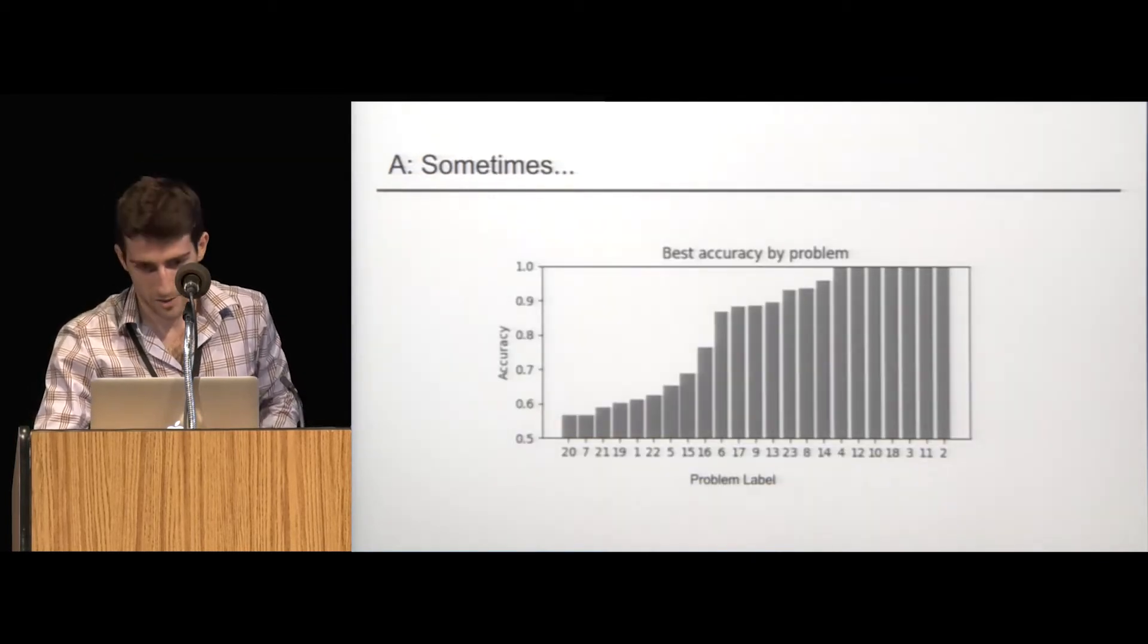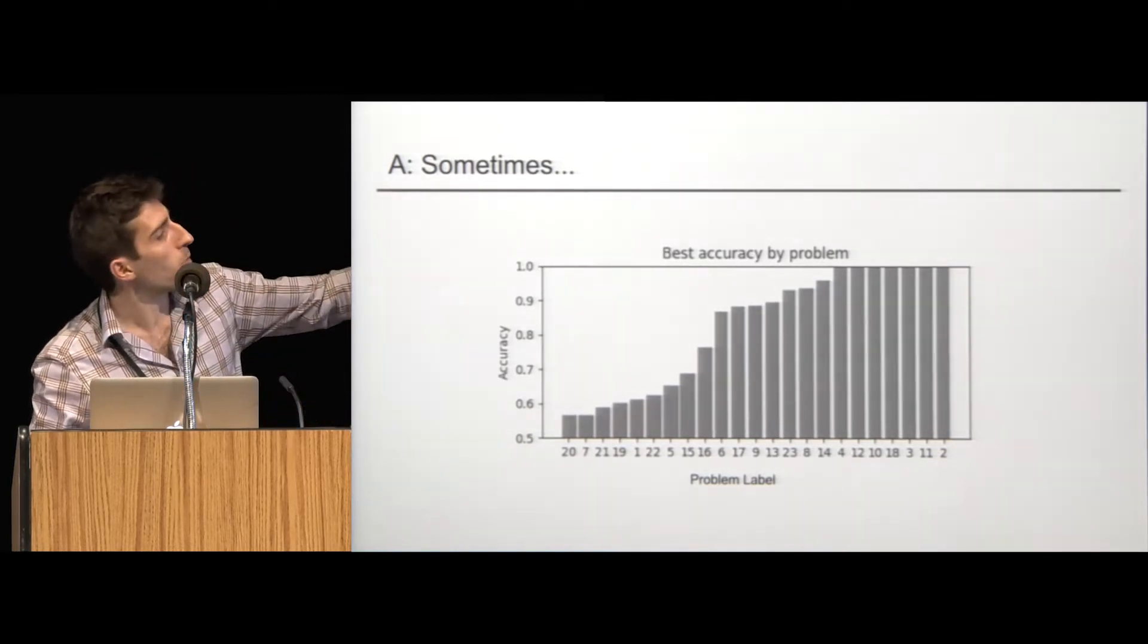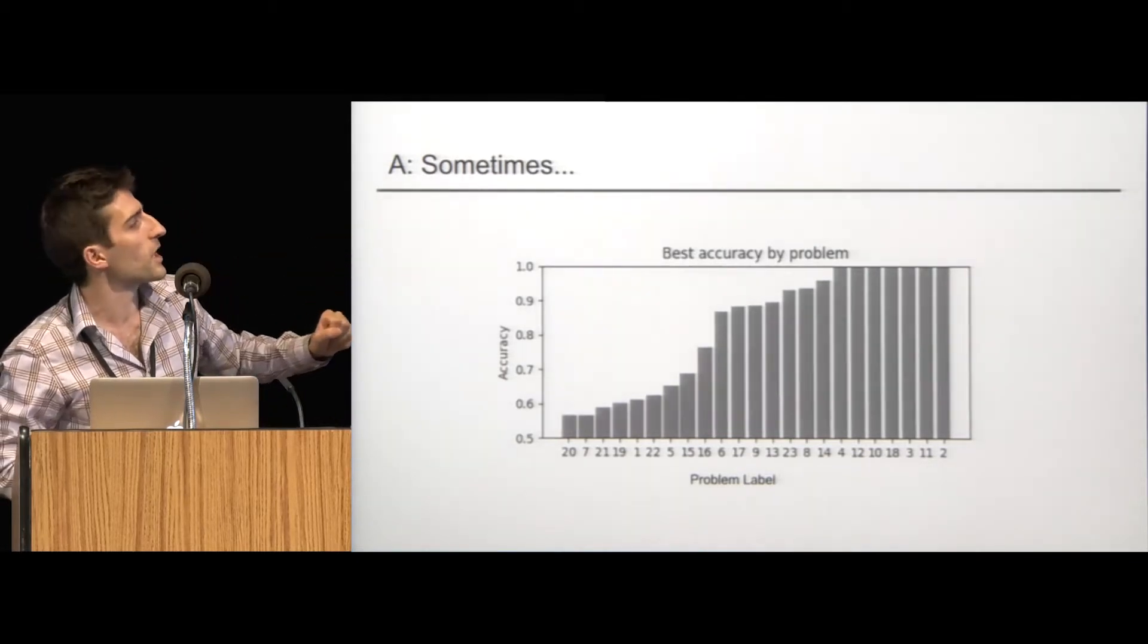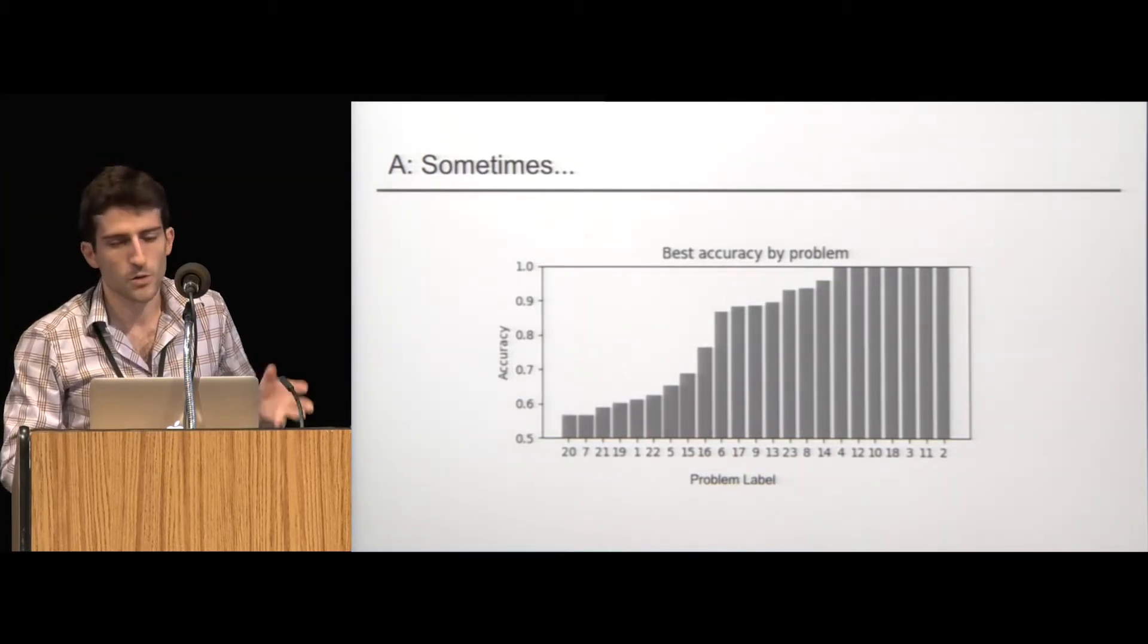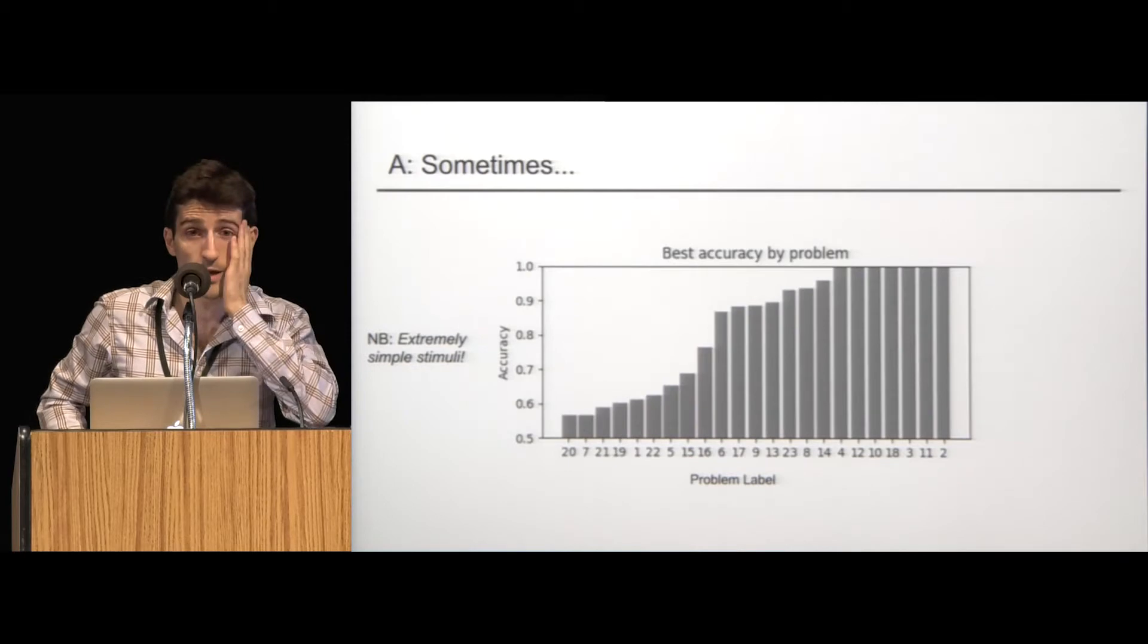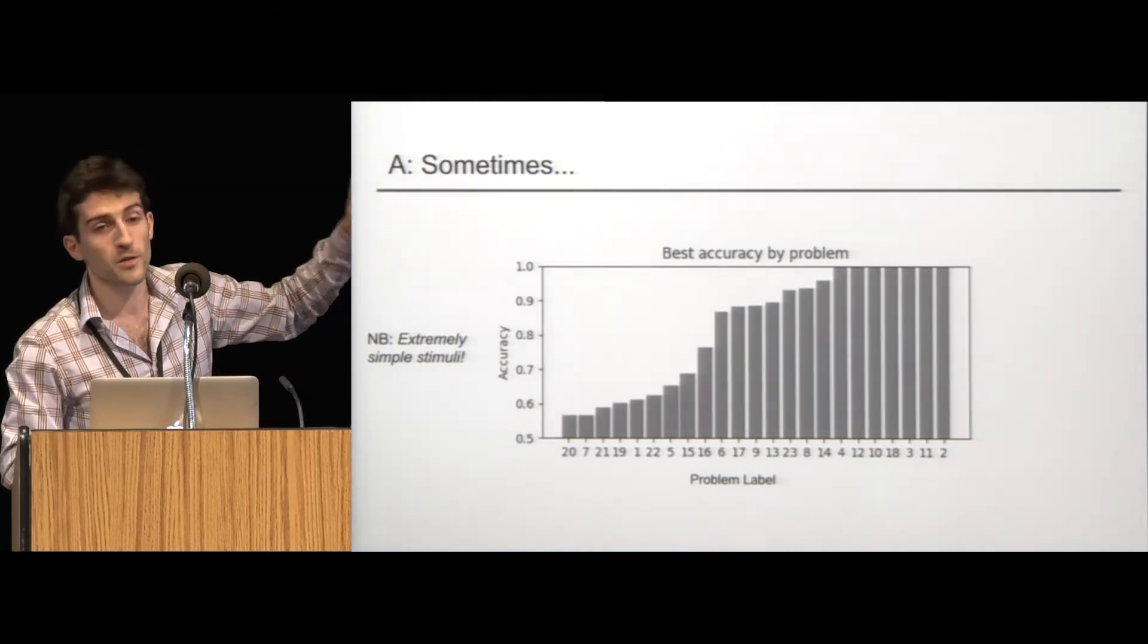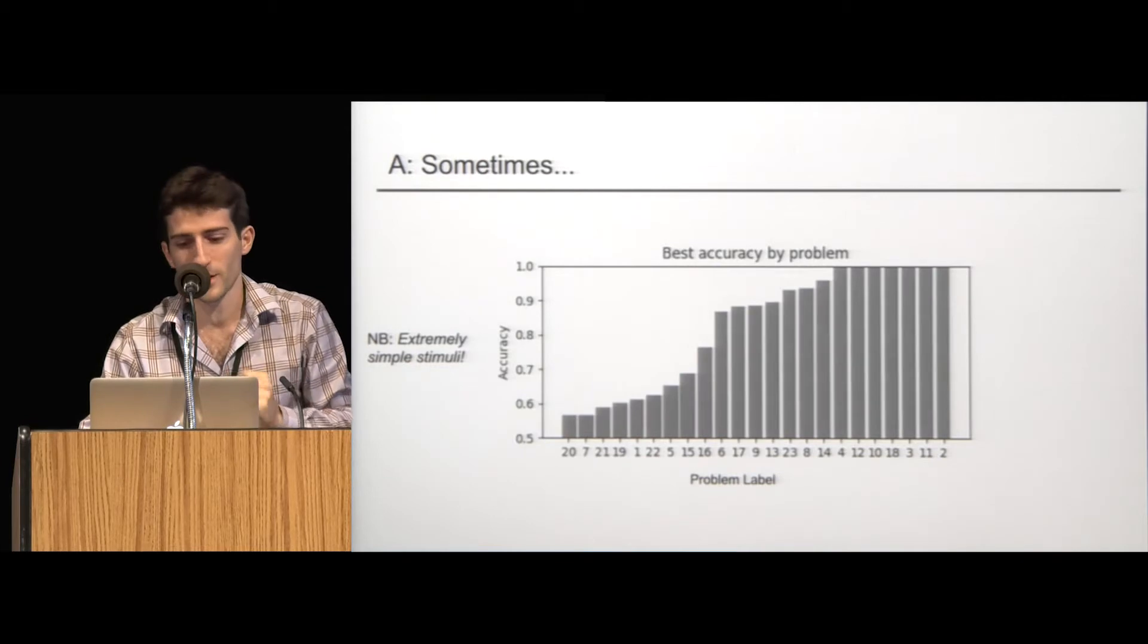Well, the answer is sometimes. So the graph that you see here is the best accuracy produced by a network in our search, ranked from worst to best across all problems. The bottom x-axis is the arbitrary problem label. So you can see, for example, that problem seven on the far left had basically chance accuracy. Problem two on the far right had 100% accuracy. So there's something going on. But remember also that these are extremely simple stimuli. So it's a binary classification problem. And also there's only two pixel values. They're small images. So when a model fails, when the search results in basically chance, it's failing quite catastrophically.